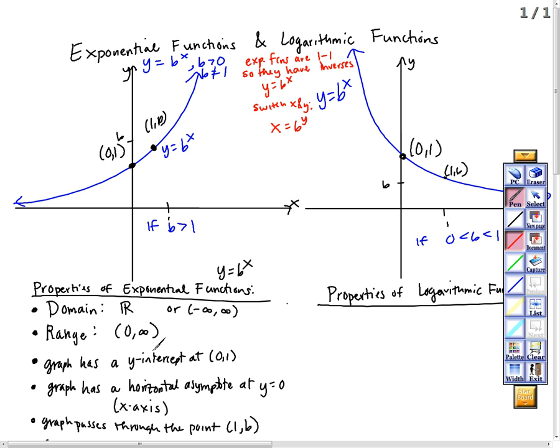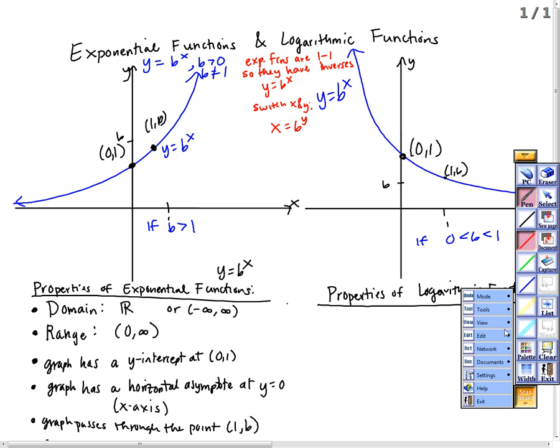We know that if we graph inverses, there's a line of symmetry — the line y equal x.